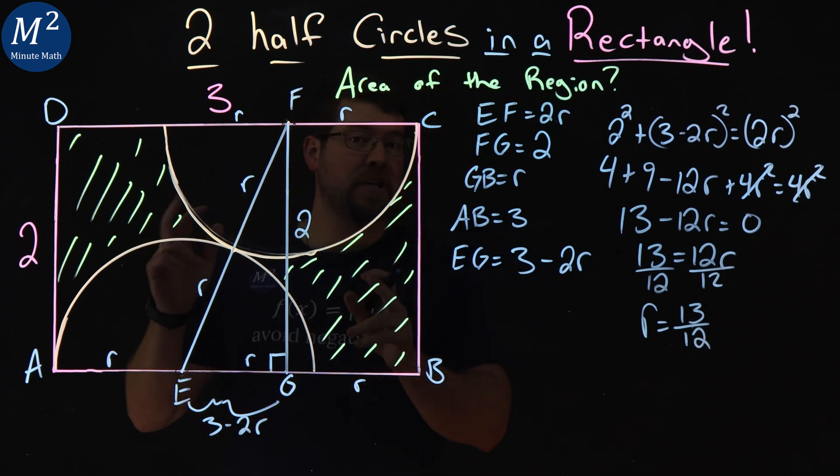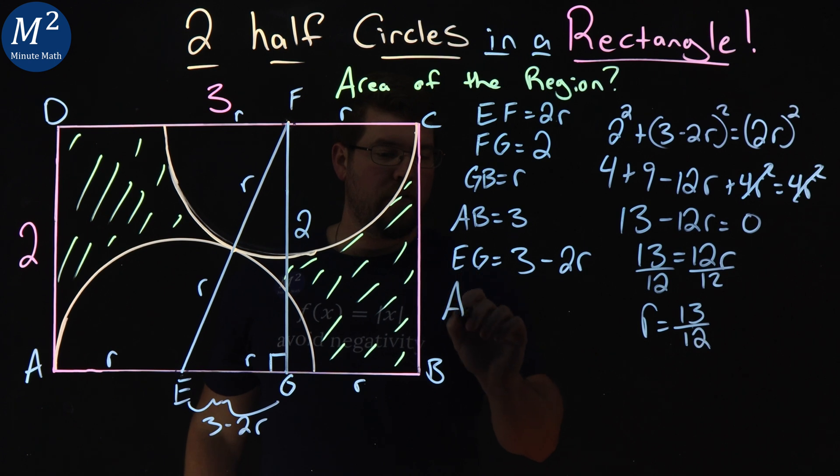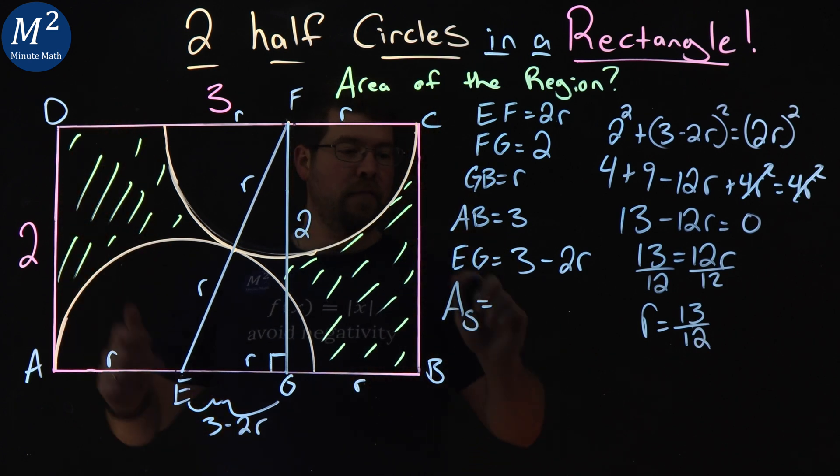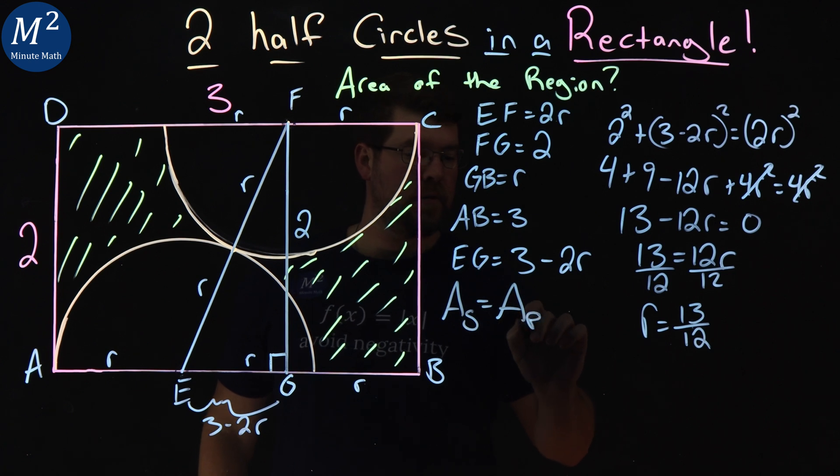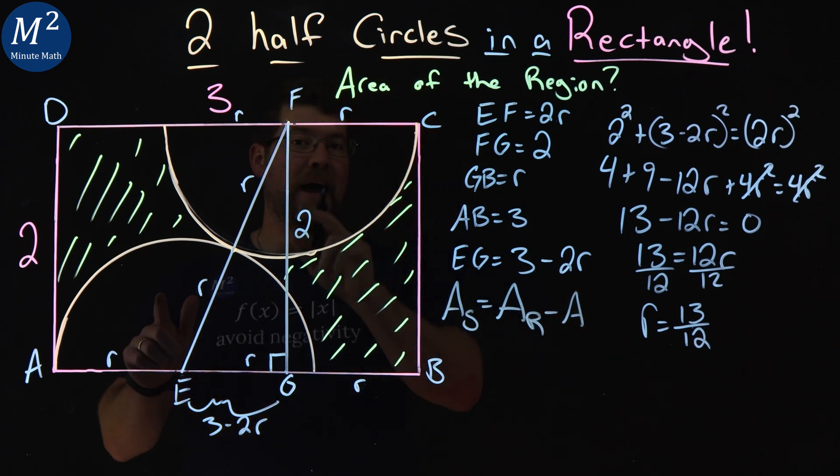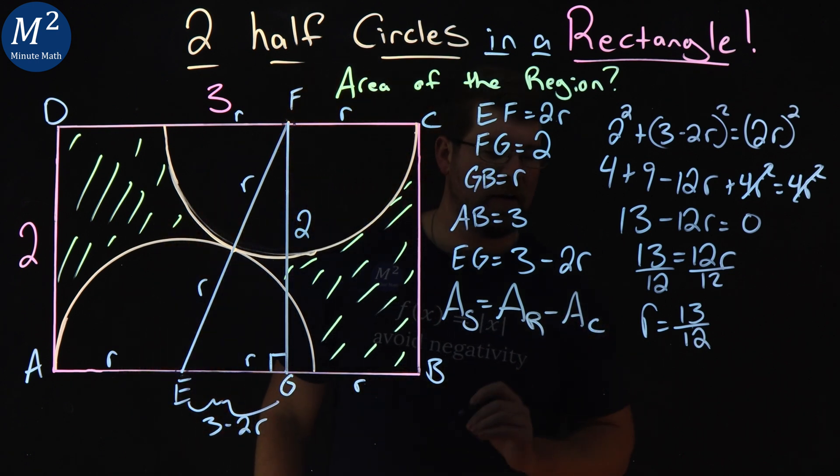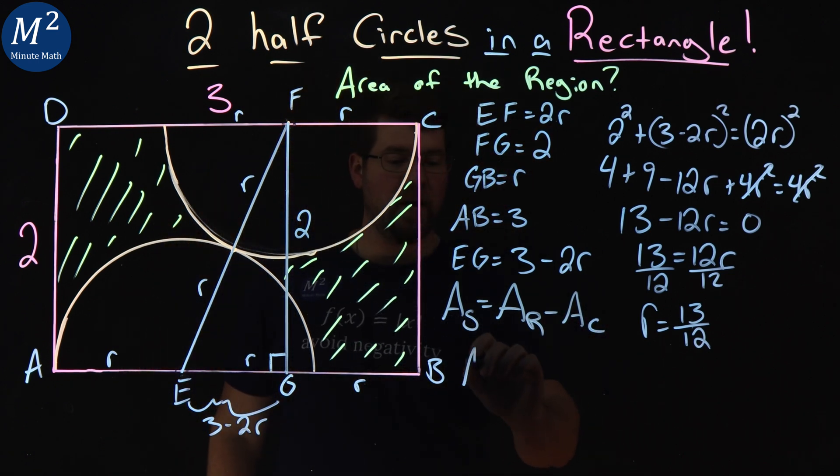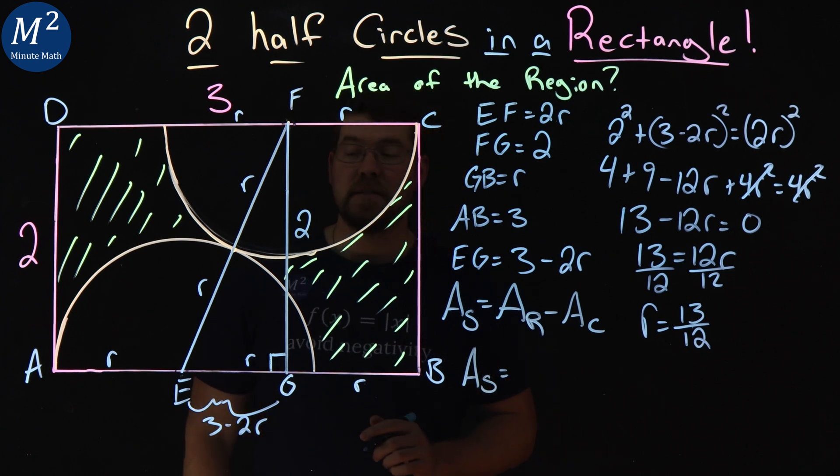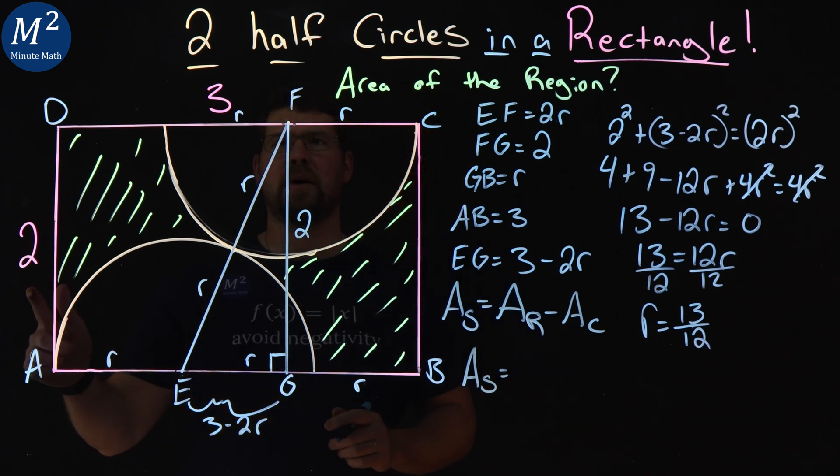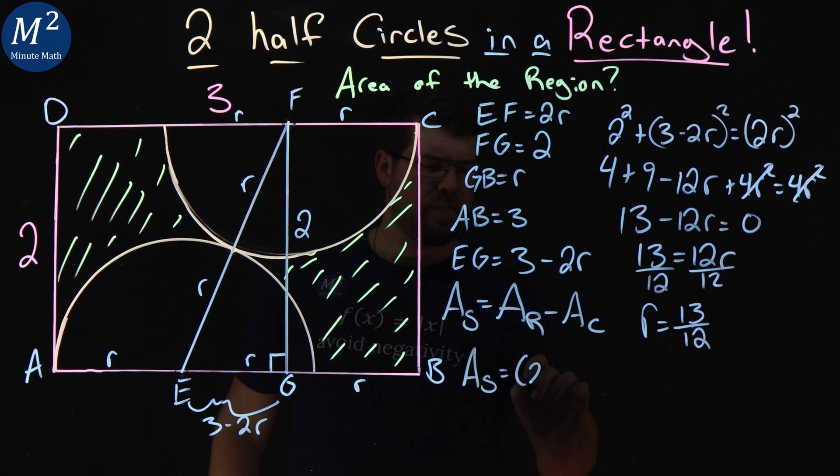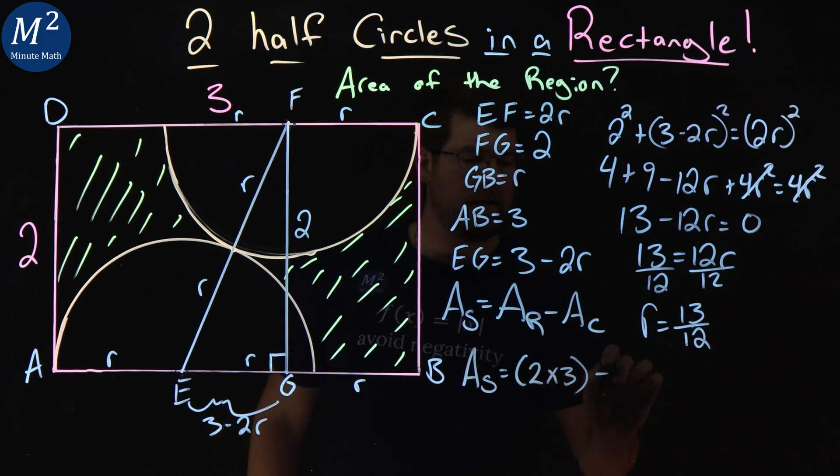To find the area of the shaded region, the area of our shaded region is equal to the area of the rectangle minus the area of two half circles, which equals one whole circle, same size, area of the circle. So, the area of our shaded region is equal to the area of the rectangle, which is 2 times 3. Length times width, not too bad.